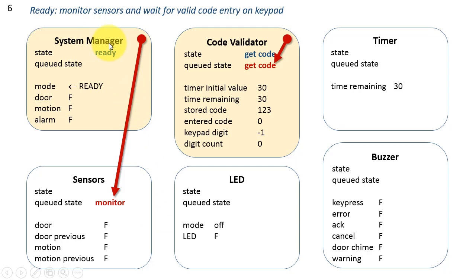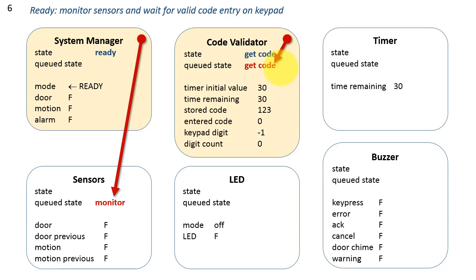In the ready state, the system manager sets the mode to ready, and that enqueues the state monitor into the sensors task. This is an example of one queued state machine inserting a message into the queue of another. The code validator again self-enqueues the state get code. If the present state is get code and you enqueue the same exact state, we call this a regenerative state. This is important because the code validator needs to continue operating, observing the keypad digit and watching for when it becomes something other than negative one.